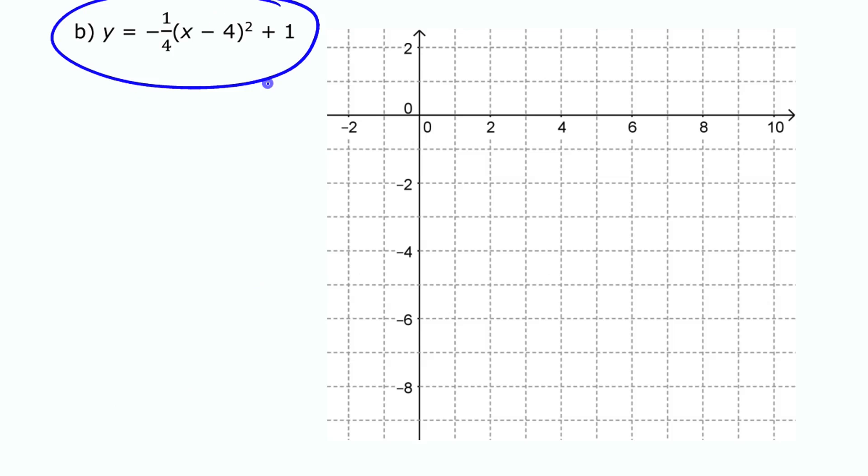We'll try and create the graph of this the same way. So we'll look at our values of these parameters here again. We have h is 4, x minus h. And we have k is 1.